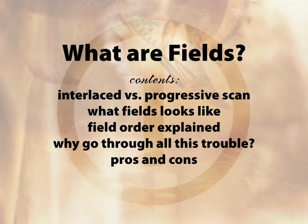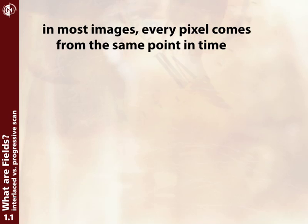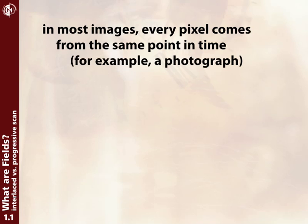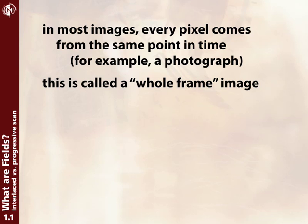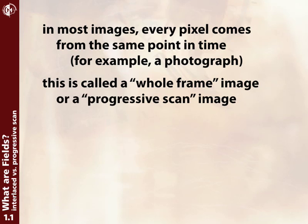Let's go into a little bit more detail about what fields and interlacing are. When you see an image, you probably think every pixel on that image came from the same point in time. That would be the case in, say, a photograph. This is referred to as a whole frame image, or sometimes as a progressive scan image.